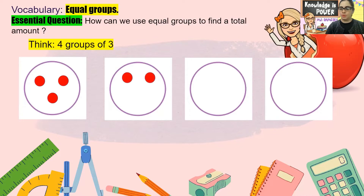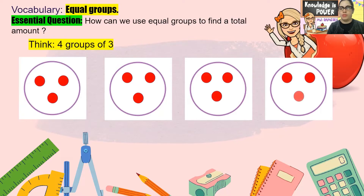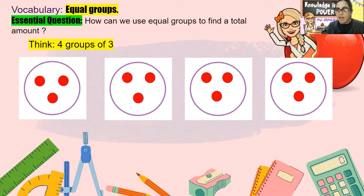One, two, three more. One, two, three more. One, two, three. To find a total amount, we just count all of the circles in each of the groups: one, two, three — one, two, three — one, two, three — one, two, three. We have three in each of the big circles.